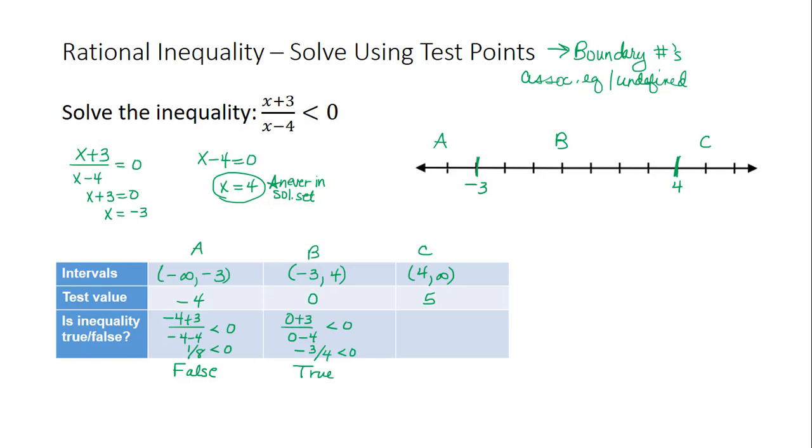And in region C, I'm going to replace x with 5 to get 5 plus 3 divided by 5 minus 4. Is that less than 0? Well, that's 8 divided by 1 or 8, which is not less than 0. So that is false.